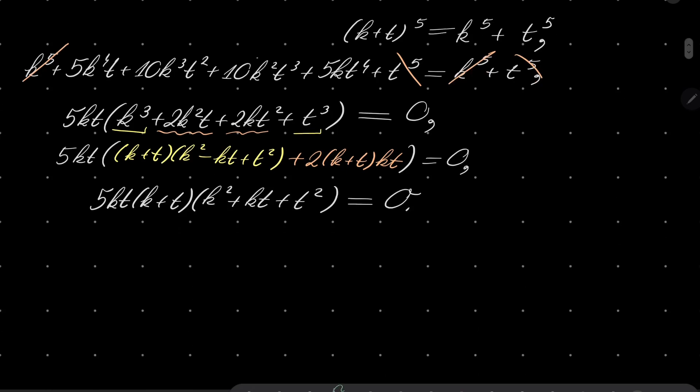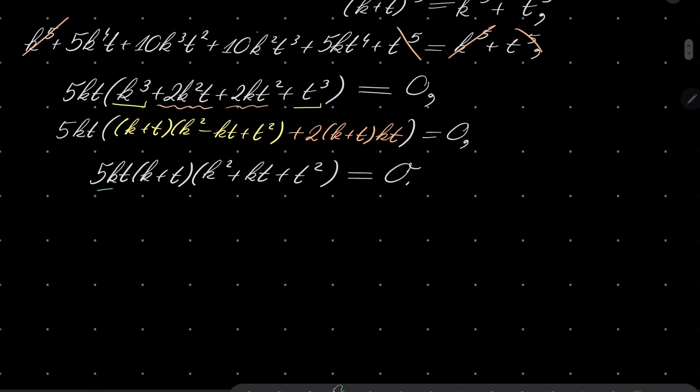And now we have the following possibilities. Either k is 0, which means, and t is any number whatsoever. So in this case, x is between 0 and 1. Or second option, t is 0, the fractional part is 0.